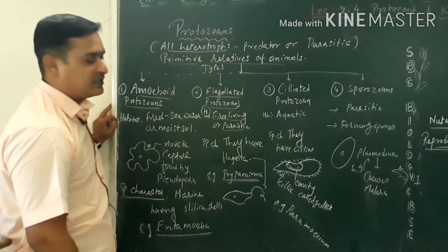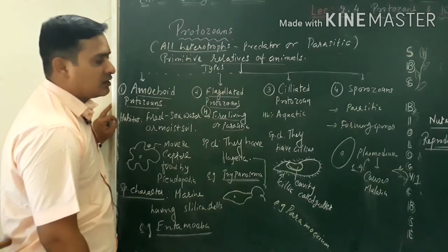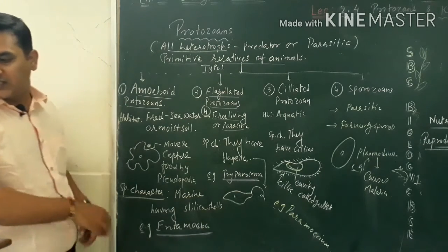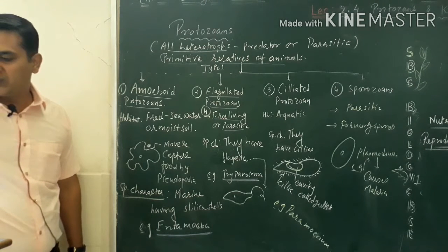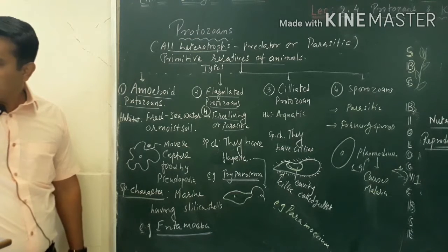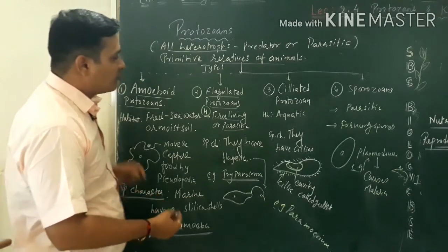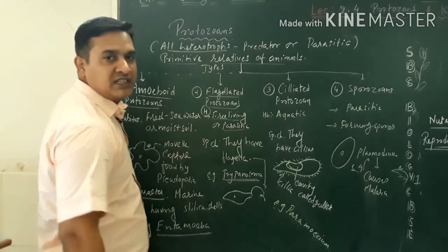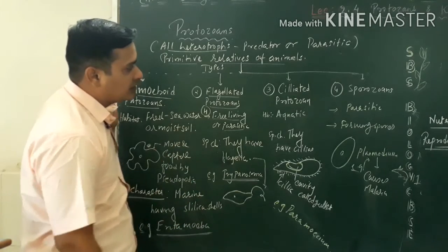They are called flagellated protozoans. They also cause different types of diseases. Which disease do they cause? They cause sleeping sickness. If they move to the body of the host, then they form sleeping sickness, meaning the disease of constant sleepiness.